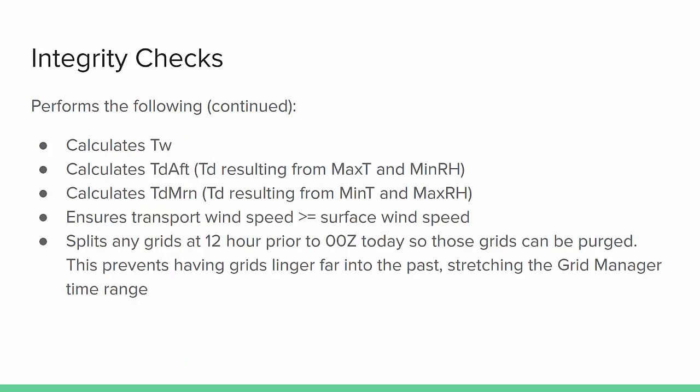Forecast Builder will calculate wet bulb temperature and will also calculate your TD afternoon and TD morning grids. Checks are then done to ensure transport wind speed is greater than or equal to your surface wind speed. It then performs a split on any grids at 12 hours prior to zero Z today so that these grids can be purged automatically by GFE, preventing grids that linger far into the past from stretching out your grid manager time range.